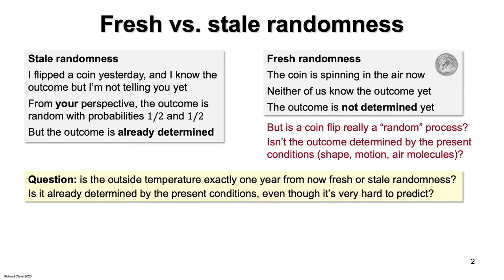The answer would be a probability distribution. A different distribution in the summer than in the winter. But is it really fresh randomness? It's hard to imagine any extension of our current technology that would enable us to make accurate weather forecasts one year in advance.